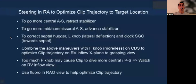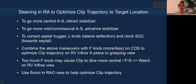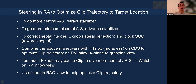To optimize clip trajectory: retract the stabilizer to go more central anterior-septal, or advance the stabilizer to go more mid-commissural. To correct septal hugging, use the L knob for lateral deflection, then clock the guide towards septal again to stand up the clip. Combine these maneuvers repeatedly with the F knob to optimize trajectory. The F knob is similar to the M knob on the MitraClip system — if you overdo it, you may end up with more lateral dive; if you don't do it enough, you may end up with a septal dive. Make sure the clip is perpendicular to the grasping view; fluoroscopy is very helpful here.